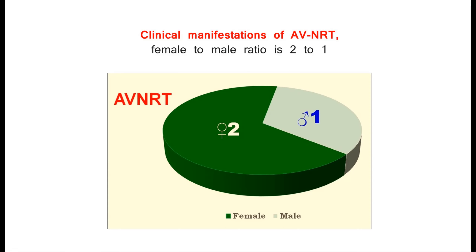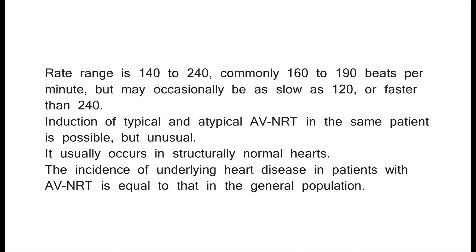Clinical manifestations of AVNRT: the female-to-male ratio is 2 to 1. Rate range is 140 to 240, commonly 160 to 190 beats per minute, but may occasionally be as slow as 120 or faster than 240. Induction of typical and atypical AVNRT in the same patient is possible but unusual. It usually occurs in structurally normal hearts, and the incidence of underlying heart disease in patients with AVNRT equals that in the general population.